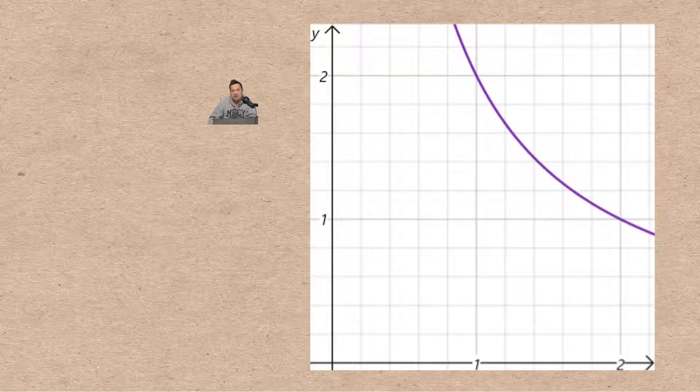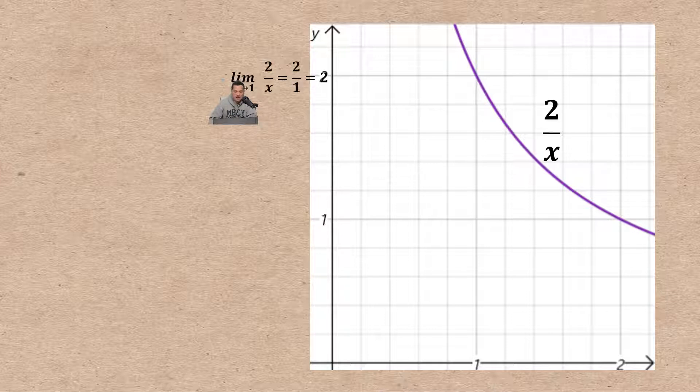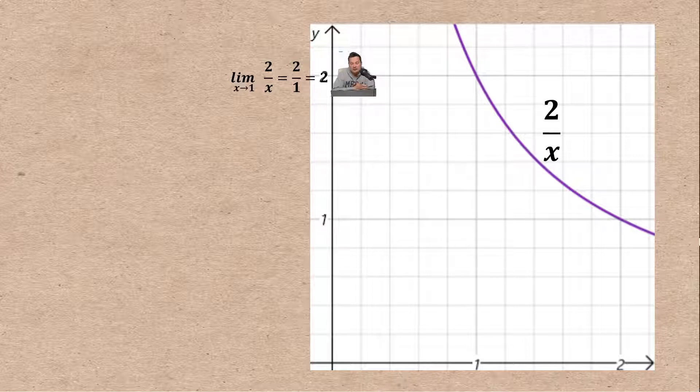Here is a piece of the graph of the function 2 over x. When you look at this function, the limit as x approaches 1 can be found simply through direct substitution. Replace x with 1 and that gives you 2. So this 2 that you see right there is the value of the function and also the limit as x approaches 1.